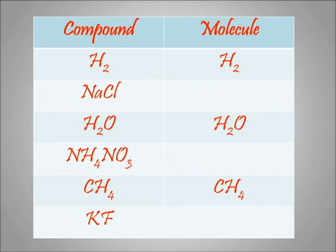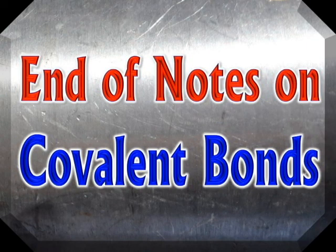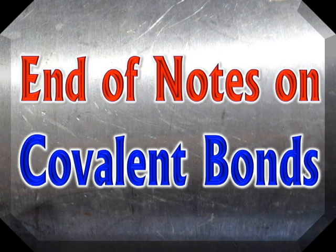So the rules of thumb work pretty well. The only tricky one was ammonium nitrate — more complicated because it looks like all non-metals but contains two polyatomic ions. Otherwise the rules of thumb are accurate, and sometimes we don't need to calculate exact electronegativity differences. That is the end of the notes on covalent bonds, but there's much more to come — geometries and structures — next time.